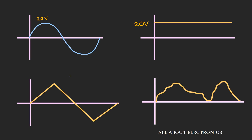Not only AC signals, but any time varying signal with an RMS value of 20V will produce the same amount of heat across that resistor R. So even a triangular wave or any arbitrary wave with an RMS value of 20V will produce the same heat. In this way, by representing any time varying signal in RMS form, we can directly correlate that signal with the equivalent value of a DC voltage source. So now the question is, how to find the RMS value for any given time varying signal?